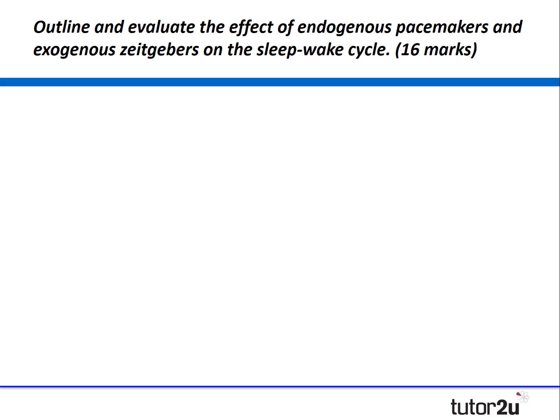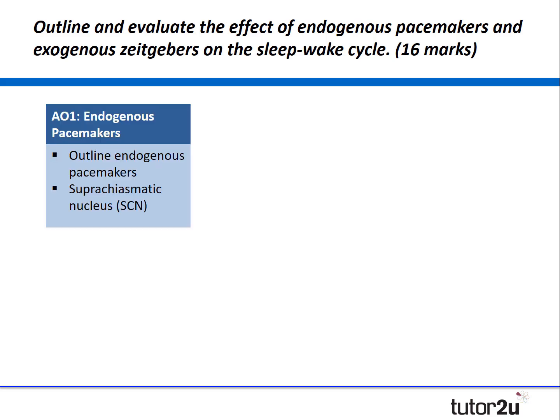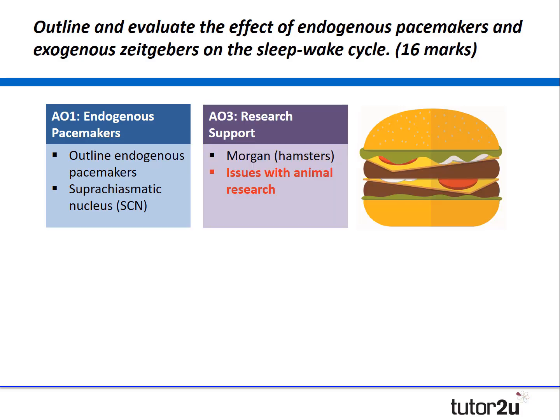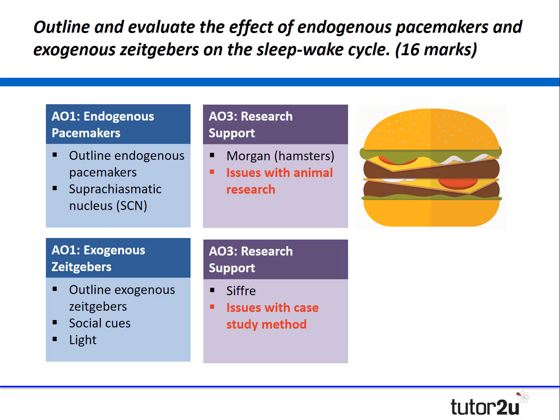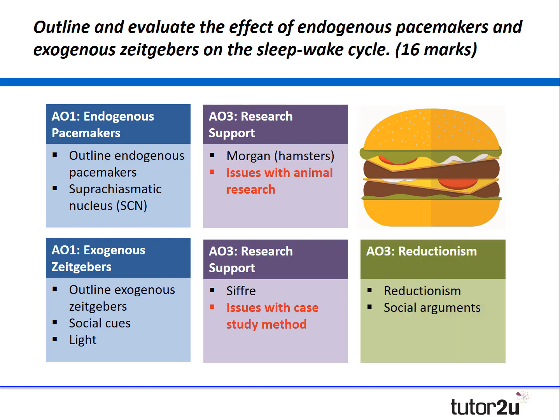If I was going to structure this essay, I would start by outlining endogenous pacemakers and then draw on research support by Morgan who examined these pacemakers in hamsters. I would extend my evaluation by bringing in a counter-criticism linked to animal research. I would then outline exogenous zeitgebers, bringing in research by Sifra, but extend this with a counter-argument about the case study method. If time allows, I will also write an evaluation paragraph on reductionism.